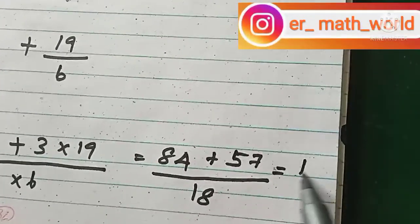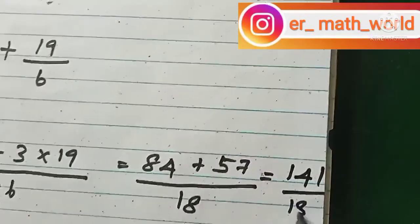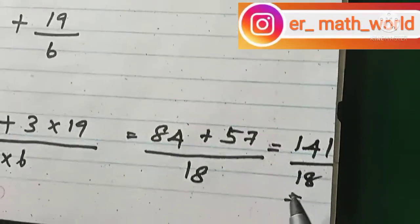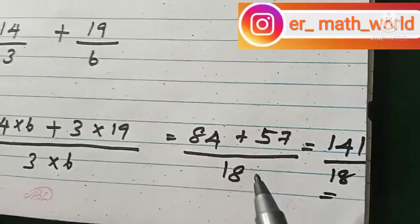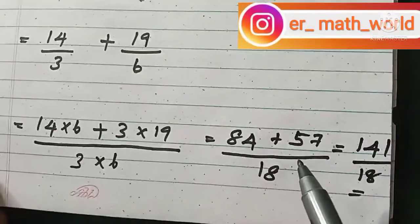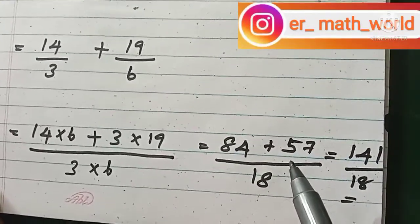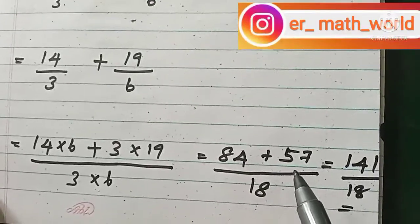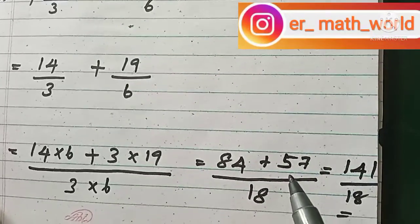Adding the two terms gives 141 divided by 18. This is the way to find the answer when adding mixed fractions. In the next video I am going to show you how to subtract mixed fractions. Please subscribe to our channel to get the upcoming videos.